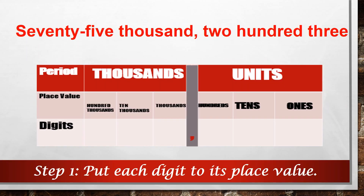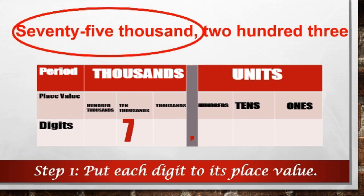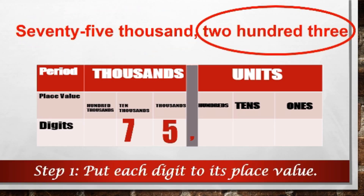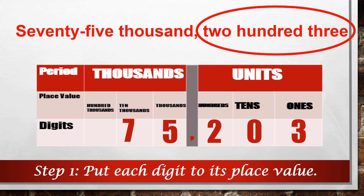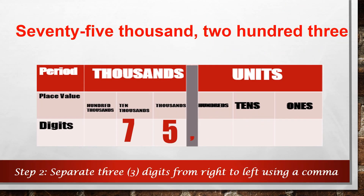First step is to put each digit to its place value. In this example, we have 75 in the thousands group. So we can write 7 in the ten-thousands place and 5 in the thousands place. Then we have 203 in the units group. So we can write 2 in the hundreds place, 0 in the tens place, and 3 in the ones place.